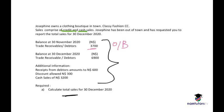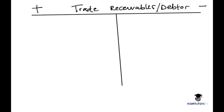The balance at 30 December 2020 — the closing balance — is 6,900. The additional information is receipts from debtors of 600 (bank), discount allowed of 300, and cash sales of 3,200. We will now add this information into the account.